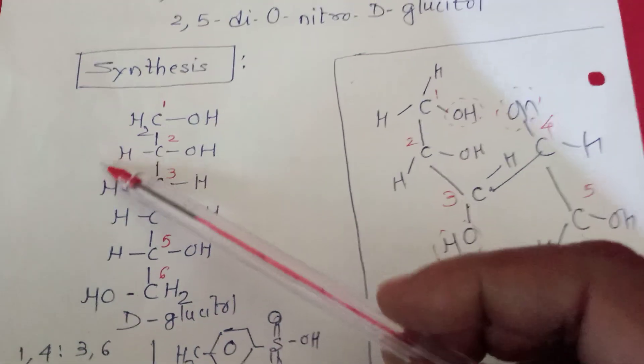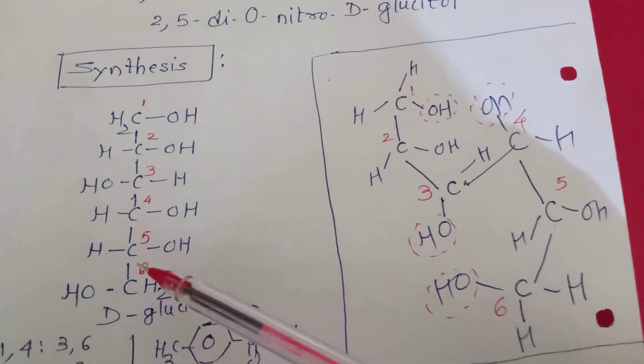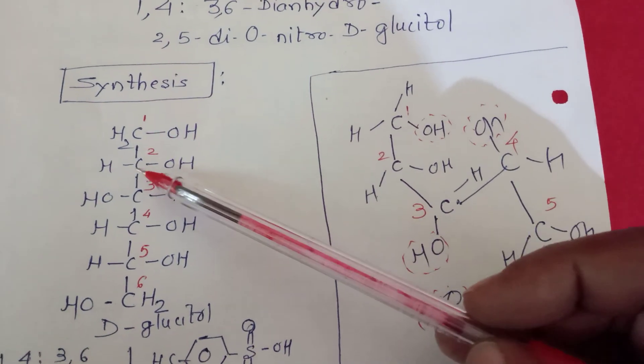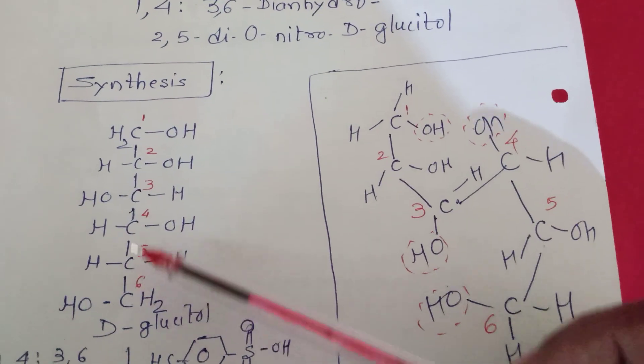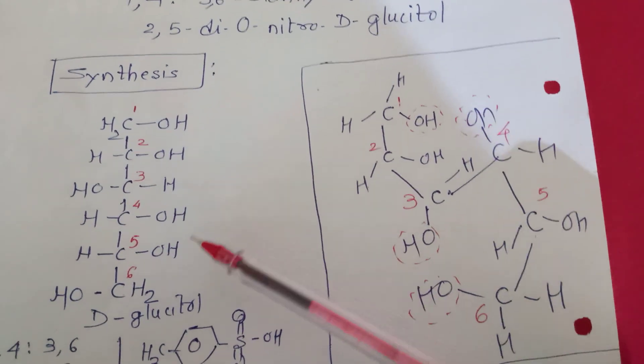This is the two-dimensional structure for D-glucitol, where you will find that there are six carbons joined with each other in a chain and containing six hydroxy groups.